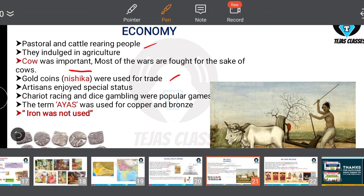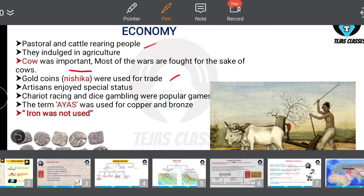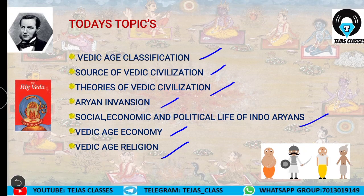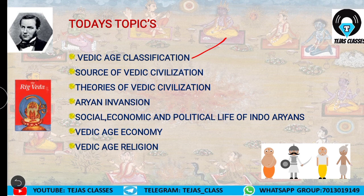To summarize what we have covered: Vedic age classification — early Vedic age from 1500 to 1000 BCE and later Vedic age from 1000 to 500 BCE. The main source of Vedic civilization is Vedic literature. Theories of Aryan invasion include Max Muller's Central Asian theory, Bal Gangadhar Tilak's Arctic theory, and others. We learned how Aryans came to India through the Andronova and BMAC cultures. In part 2 we will learn about the later Vedic age.